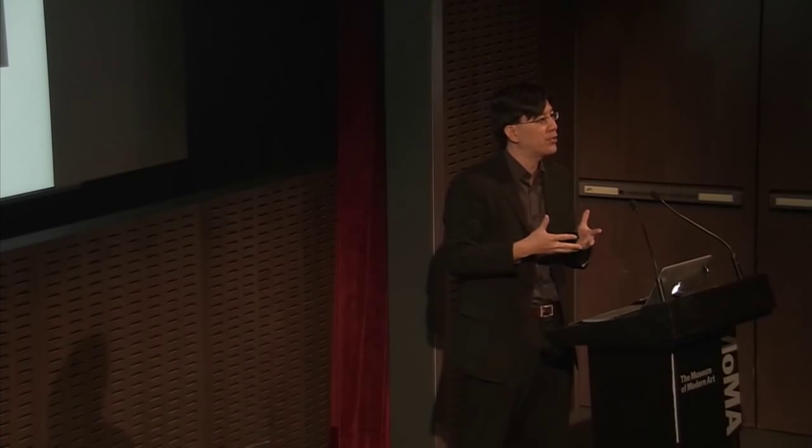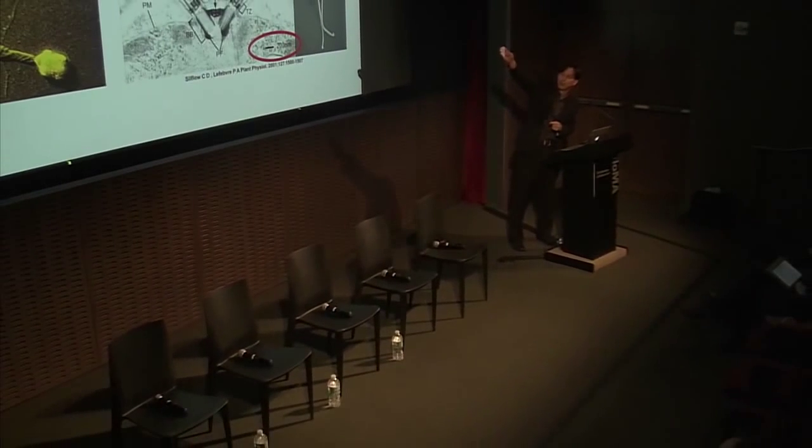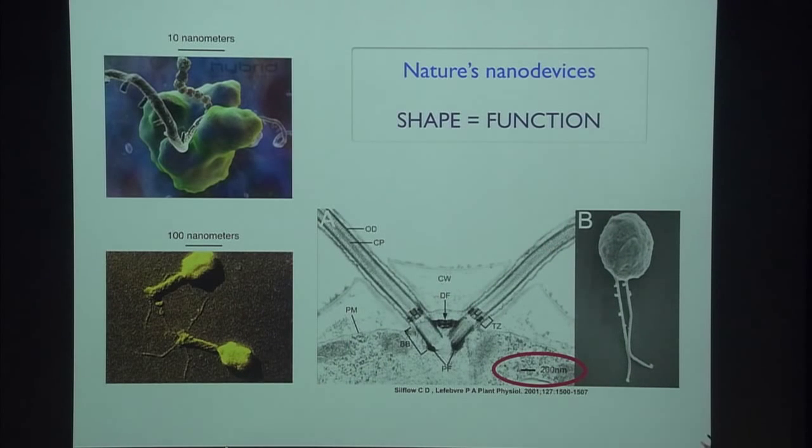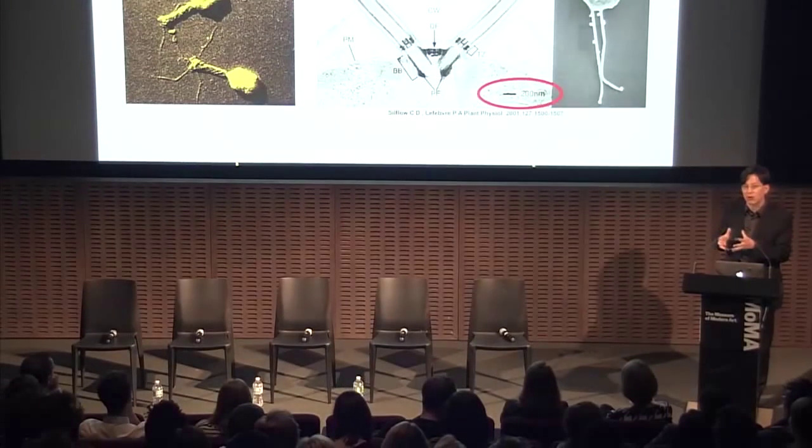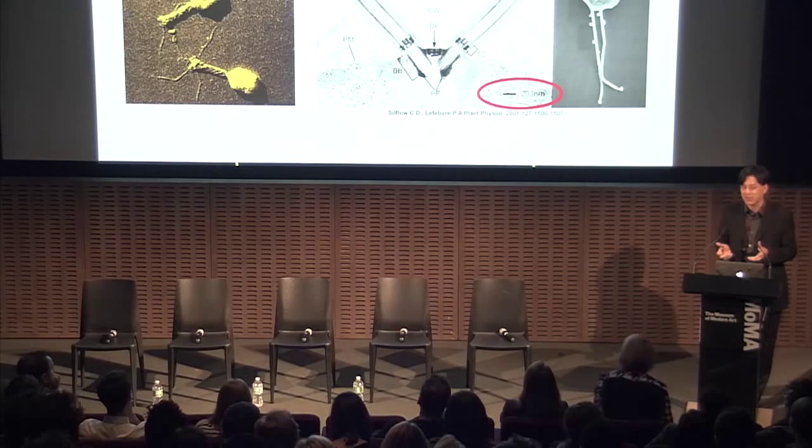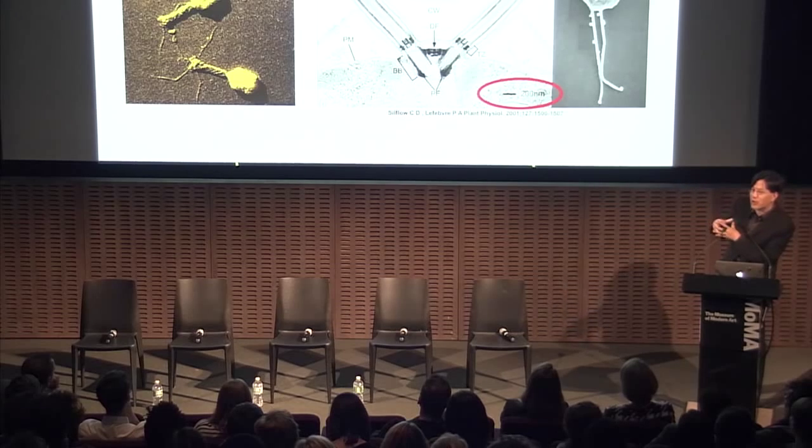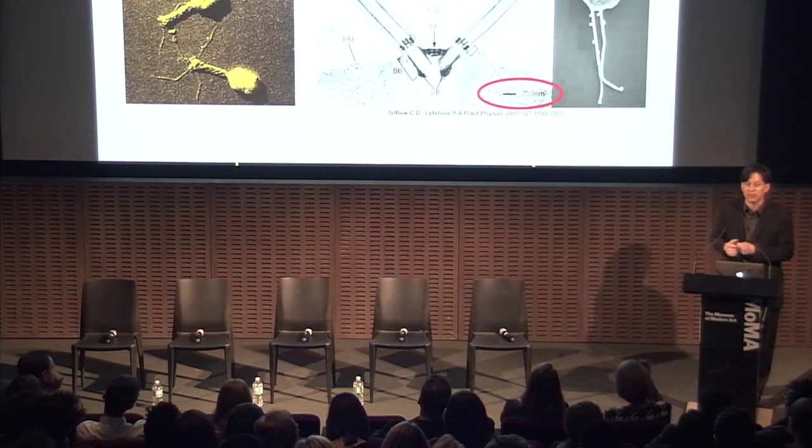For both synthetic biology and for natural biology, shape is really integrally mixed with function. In order to fulfill the potential of synthetic biology, we really need to learn how to control shape on these very smallest scales. The example on the upper left is the artistic rendition of the ribosome. It's a cell's protein printer. It prints proteins, and it's about 25 nanometers in diameter. It's considered to be a pretty large macromolecular complex. And because of its shape, it's able to decode information in a messenger RNA tape into a sequence of amino acids to build proteins.